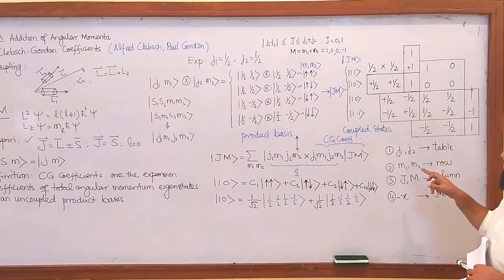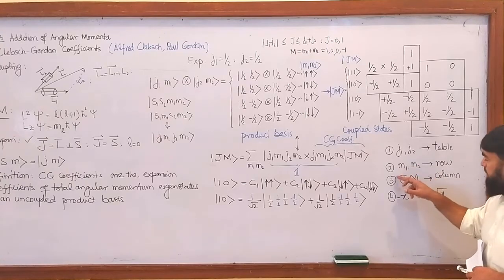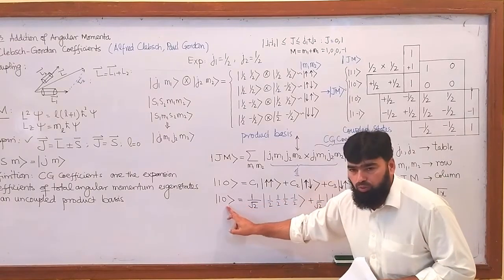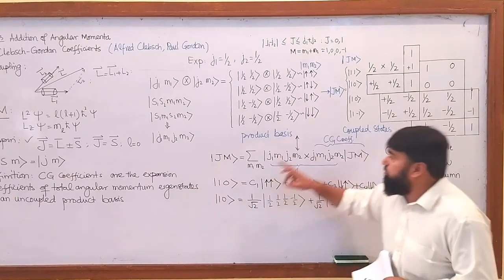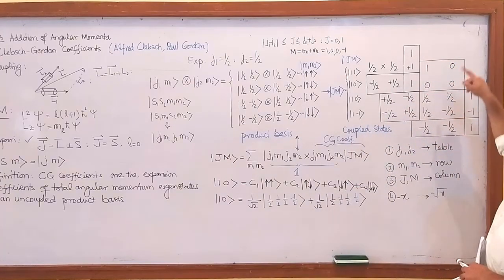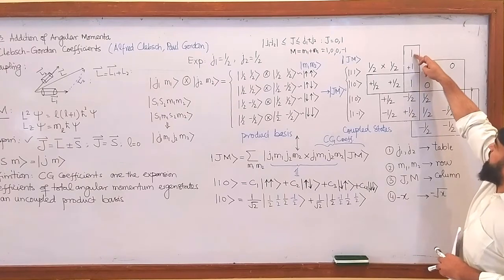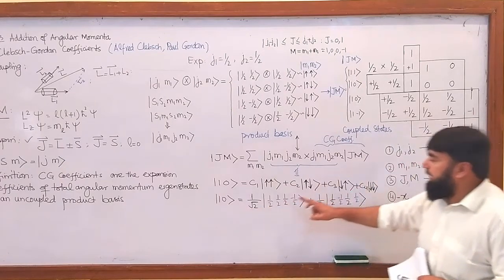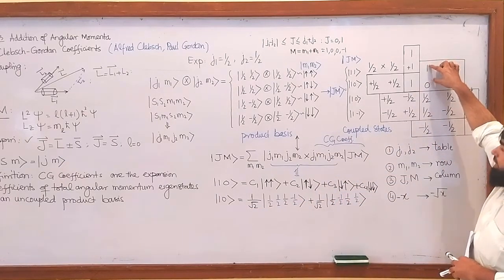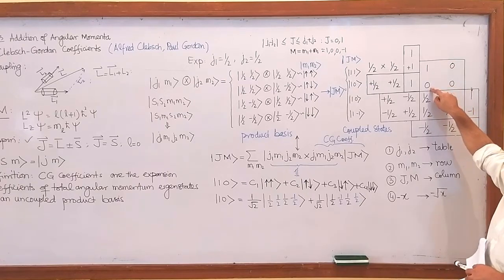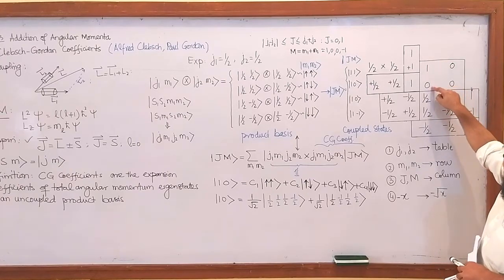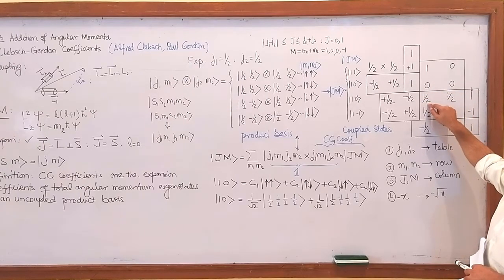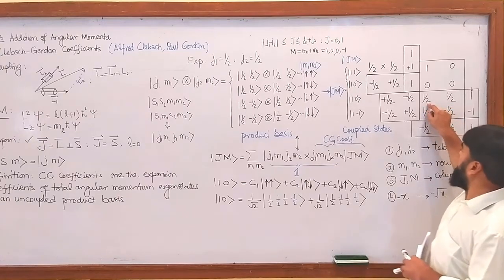Now we will have to locate our coupled state — means the column. I am writing for the |1,0⟩ coupled state. So |1,0⟩ should be a column. If I was locating for |1,1⟩, I will consider that column. I am writing this for the |1,0⟩ state. First I will locate the column here in the table — and it is |1,0⟩. This is the coefficient which is associated with |1,0⟩, and that coefficient is to be square rooted.